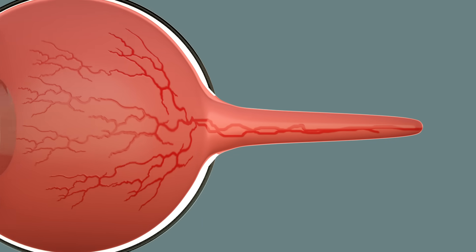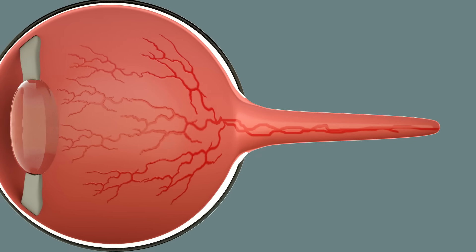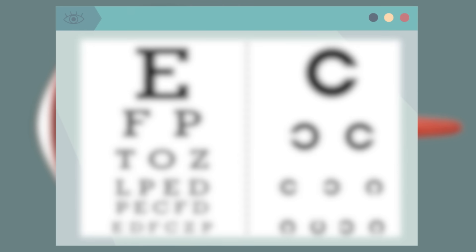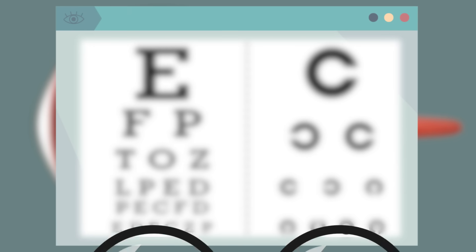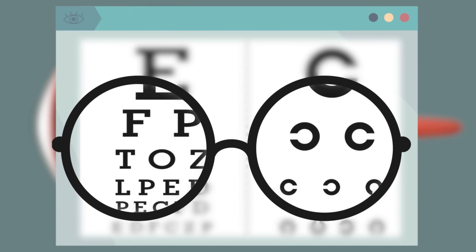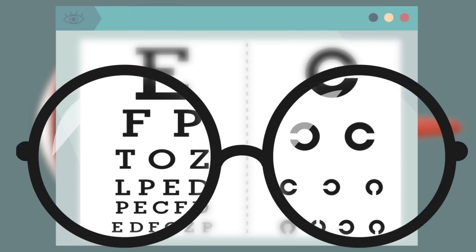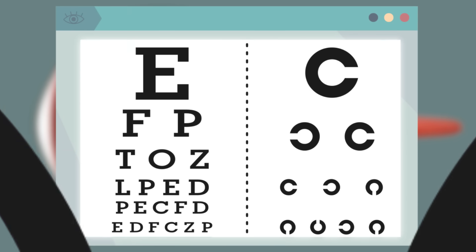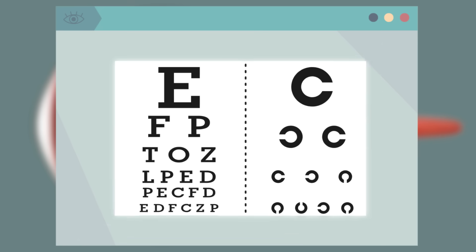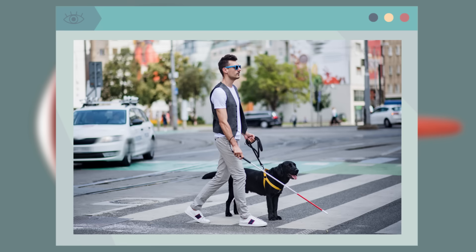Sometimes certain parts of the eye won't work properly, and this causes vision problems. To solve them and be able to see clearly, some people need to wear glasses. Vision problems may also cause vision loss, which is known as blindness or visual impairment.